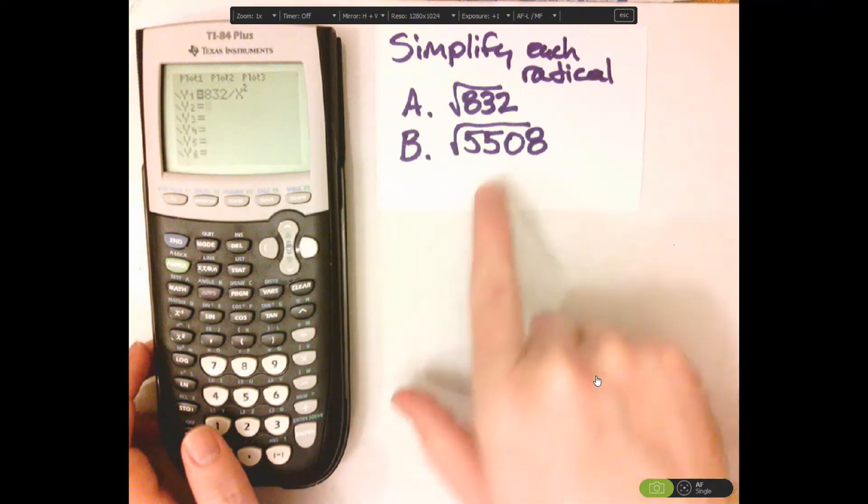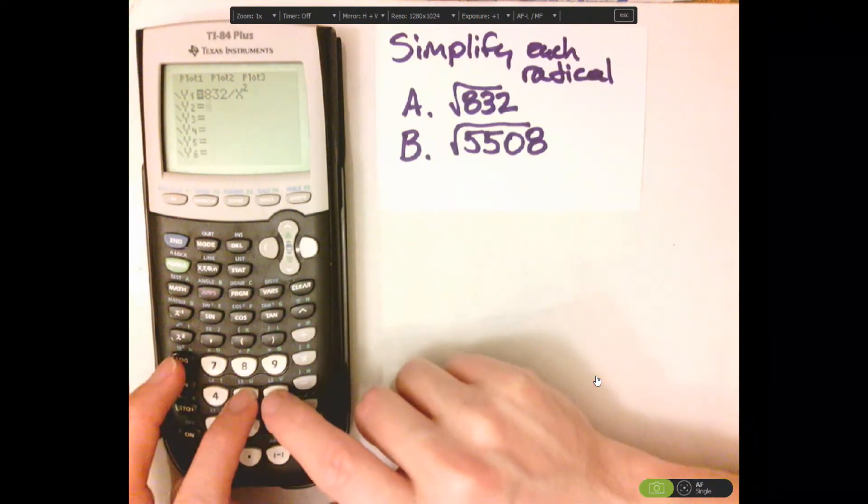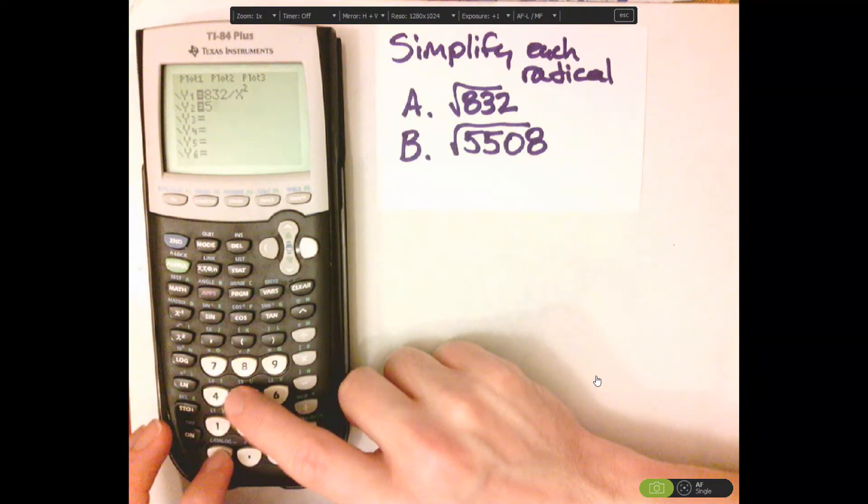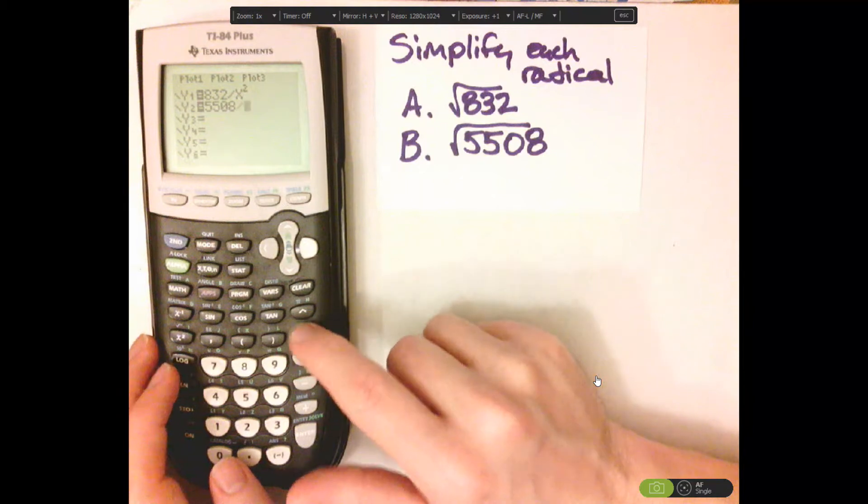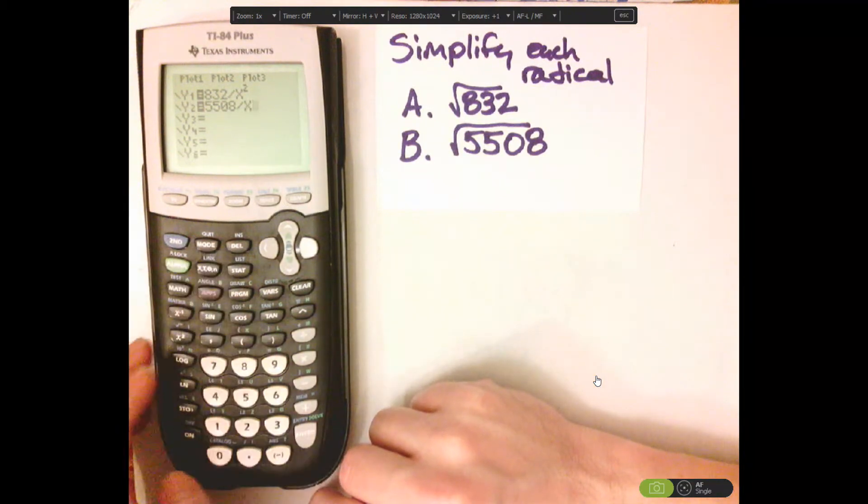I'm going to do these simultaneously, so I'm going to type in this as well: 5,508 divided by x squared.